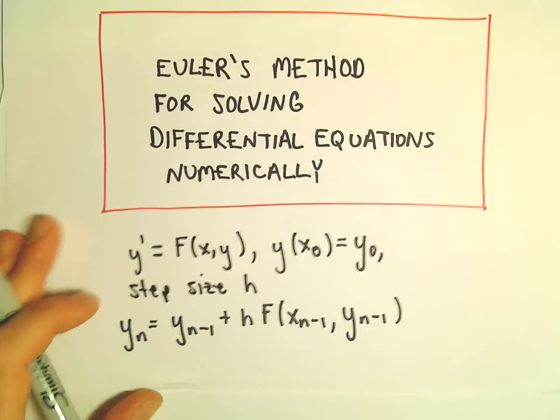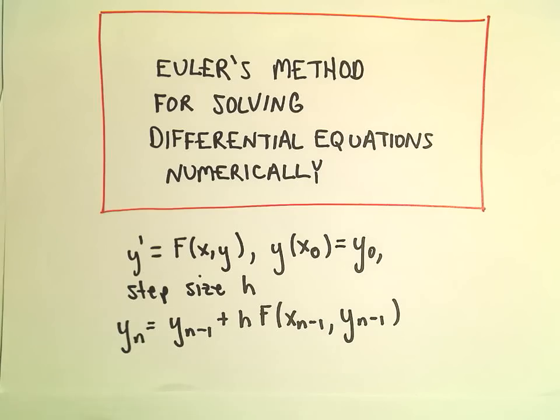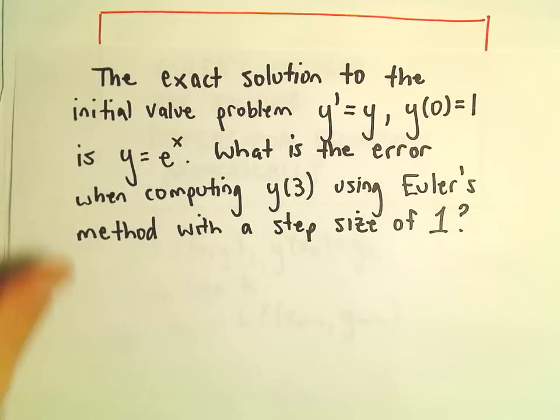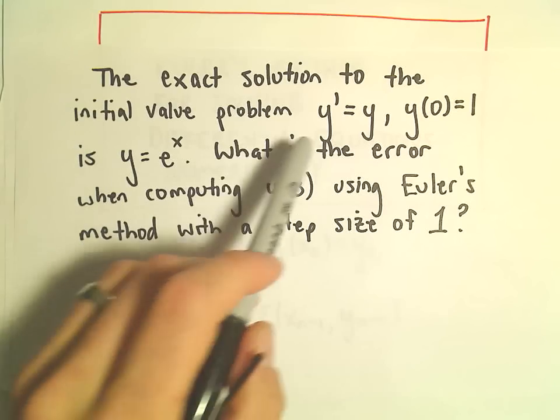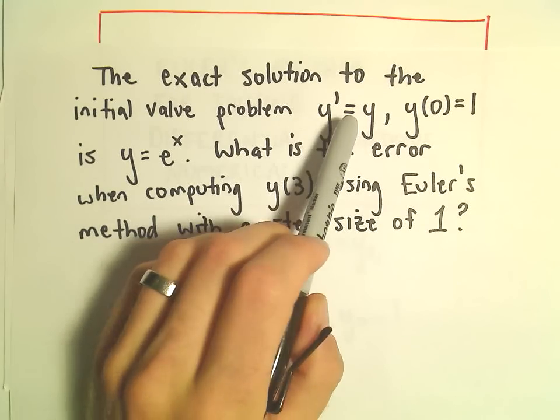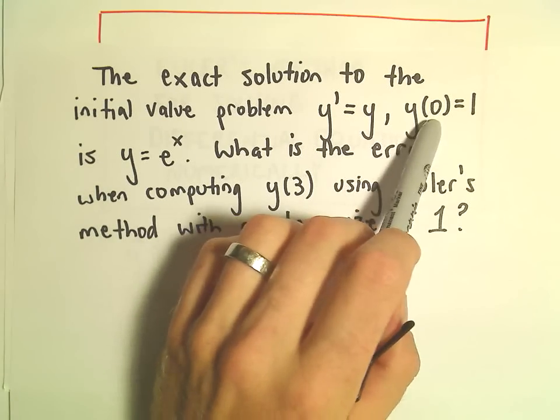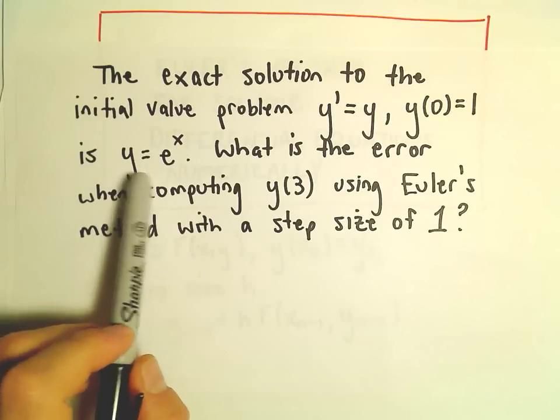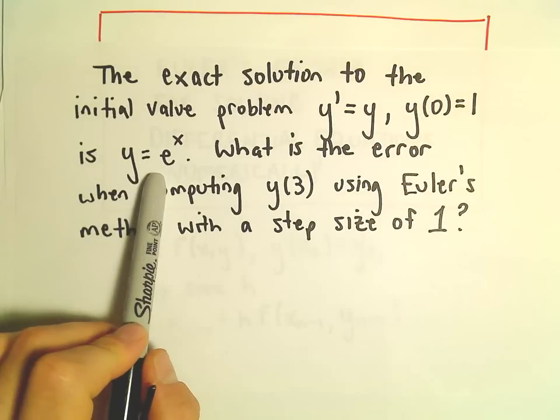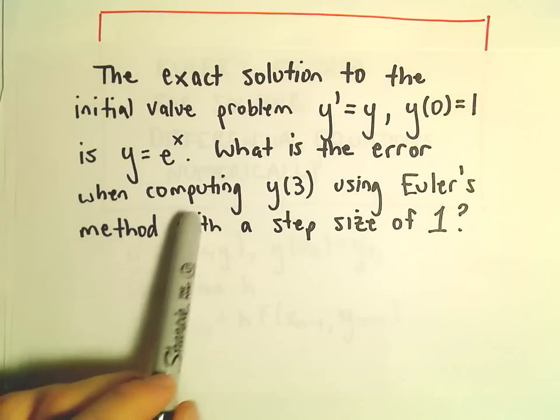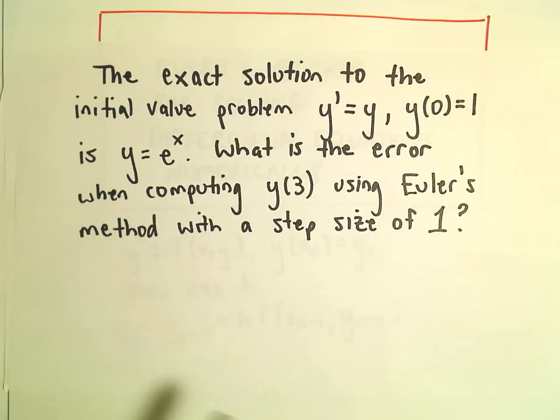Alright, here we're going to look at another example involving Euler's method. So it turns out that the exact solution to the initial value problem y' = y, where y(0) = 1, the solution to that is the function y = e^x. We want to know what's the error in computing y(3) when using Euler's method with a step size of 1.